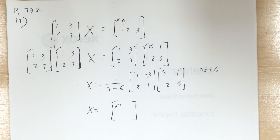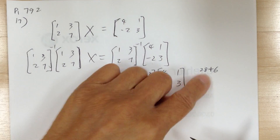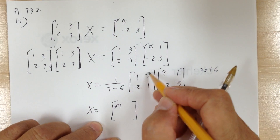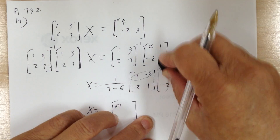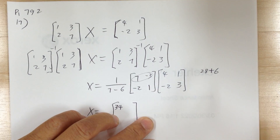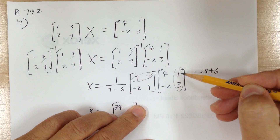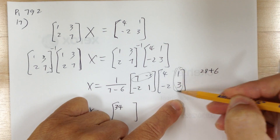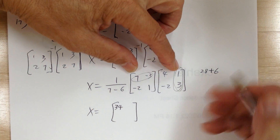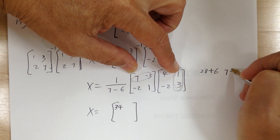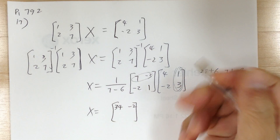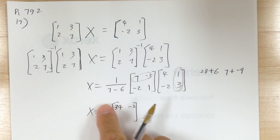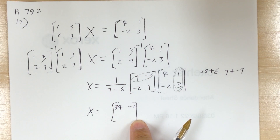Let me draw this so you know what I'm talking about. This number came from the first row, first column. Then you go first row, second column. So you multiply and get 7 plus negative 9, which gives you negative 2. Since you used the first row, second column, that goes in the first row, second column position.